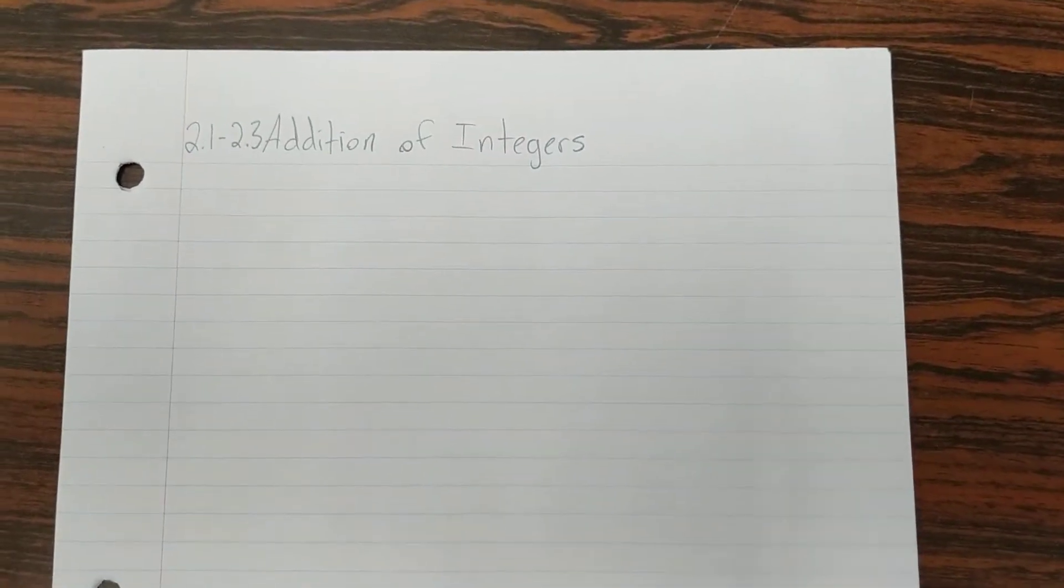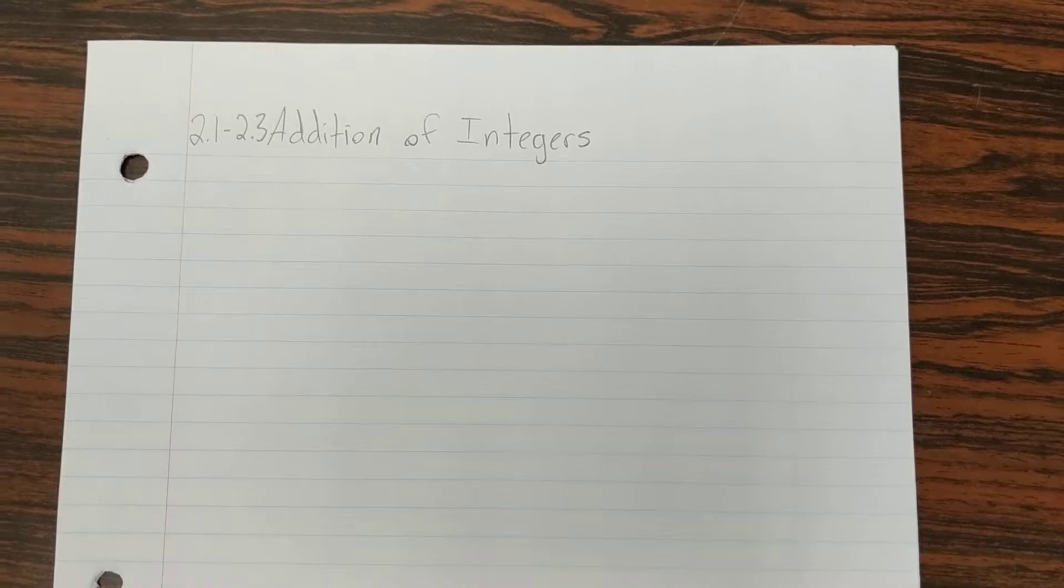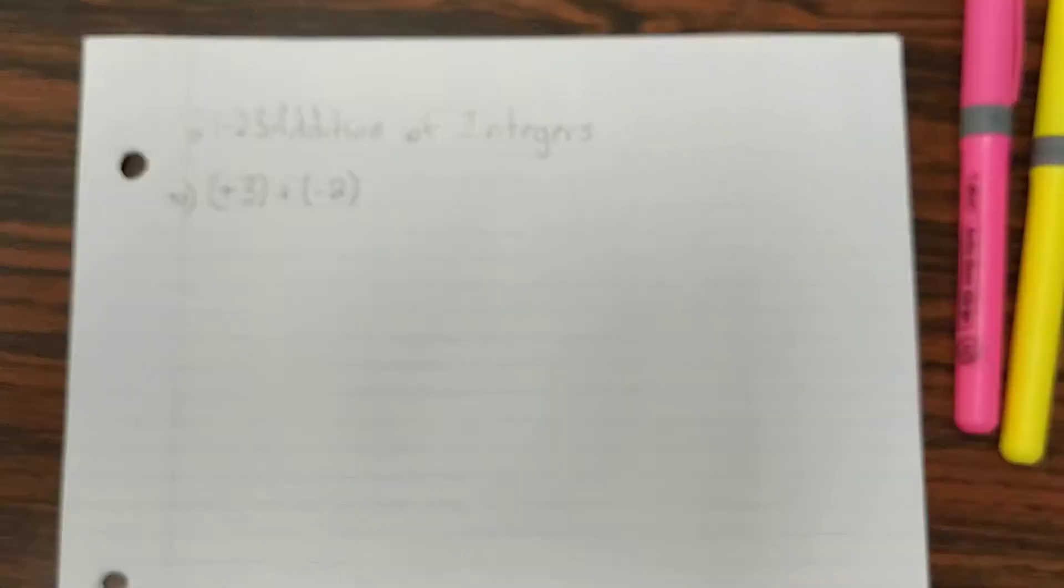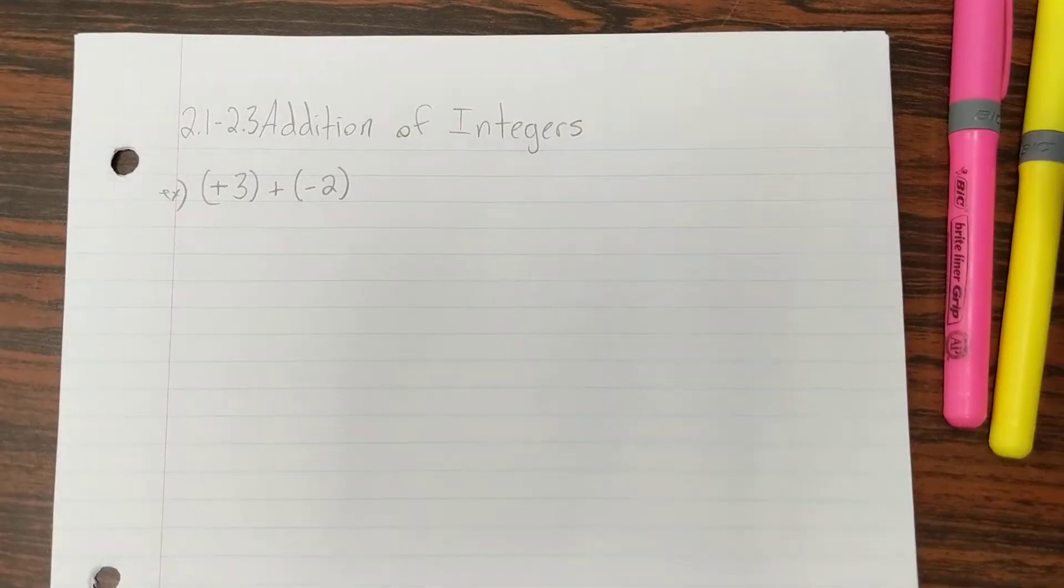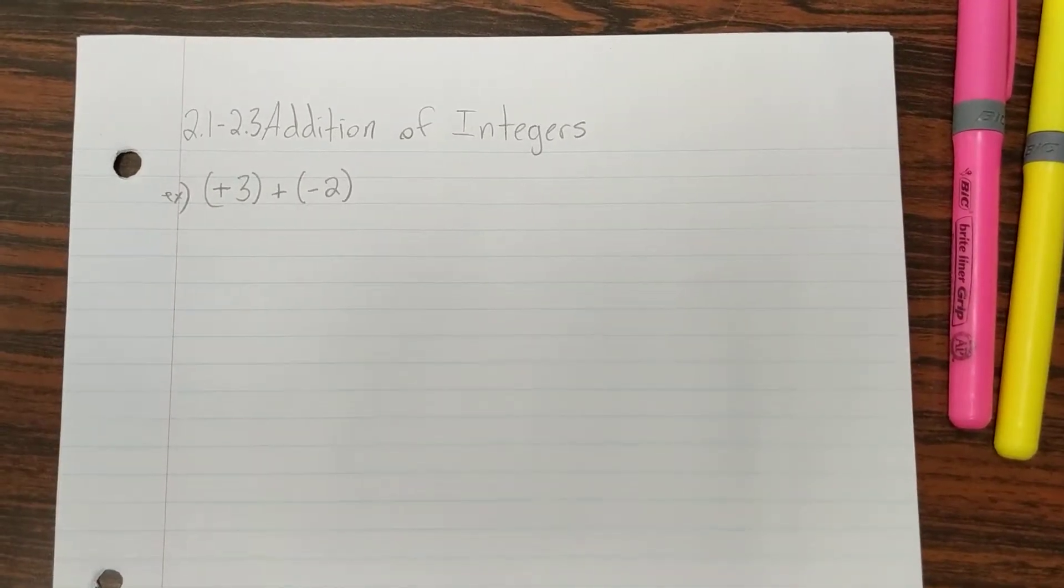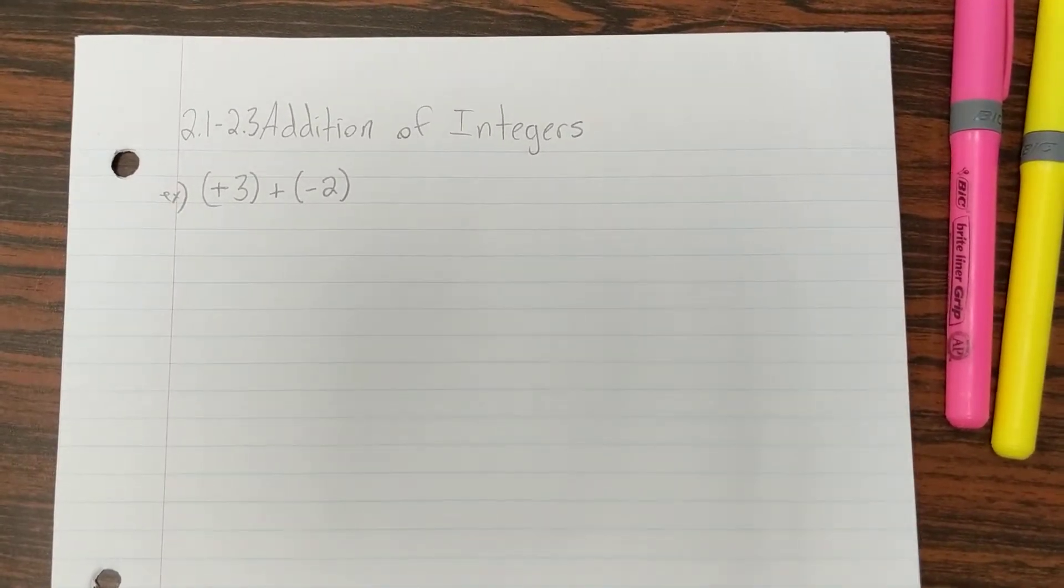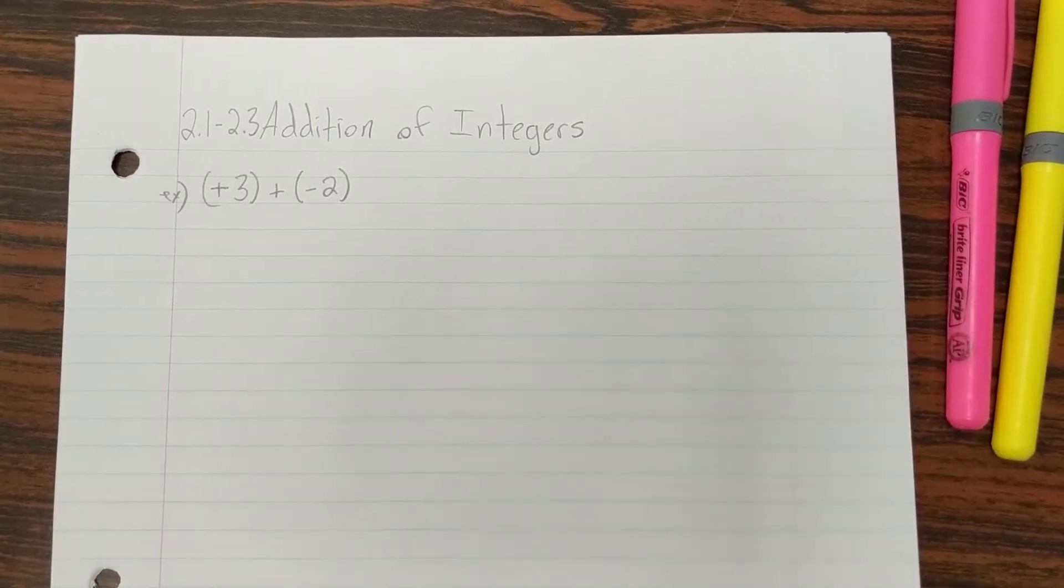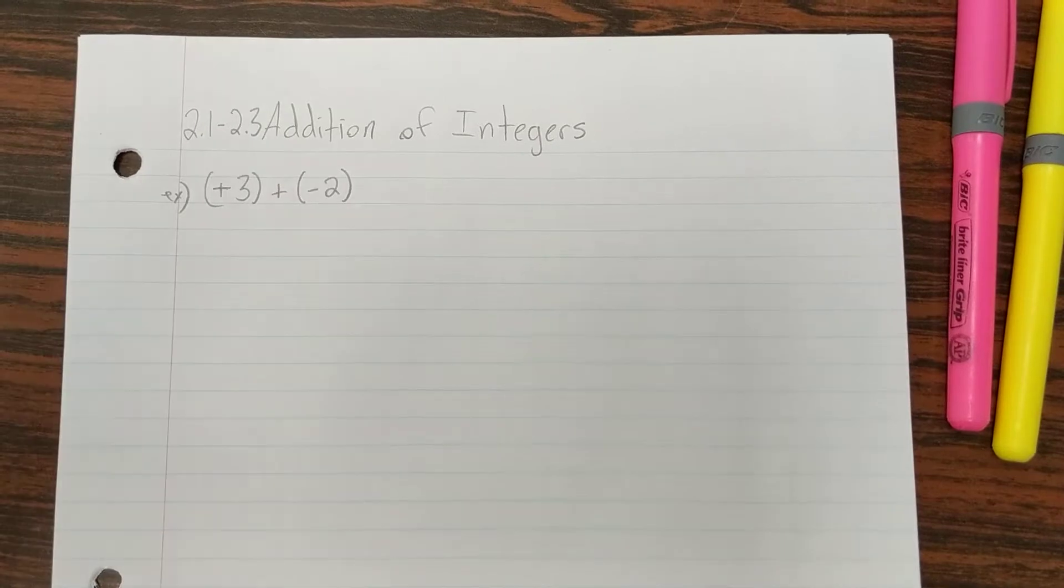Hey, grade 7s. We're going to talk about addition of integers. It's about what we've been talking about for the last couple lessons. Let's say we've got this example, positive 3 plus negative 2. We know two different ways we can show this, and I'm going to show both. One is using algebra tiles, and one would be using a number line.